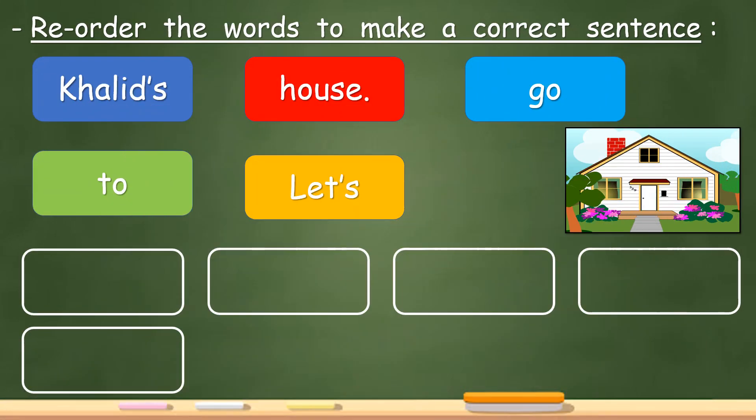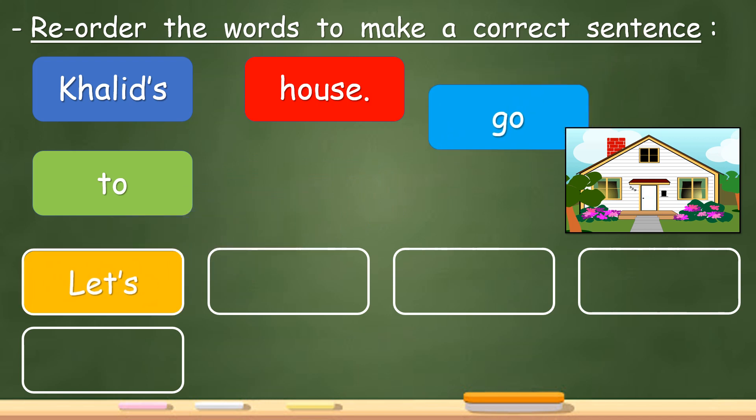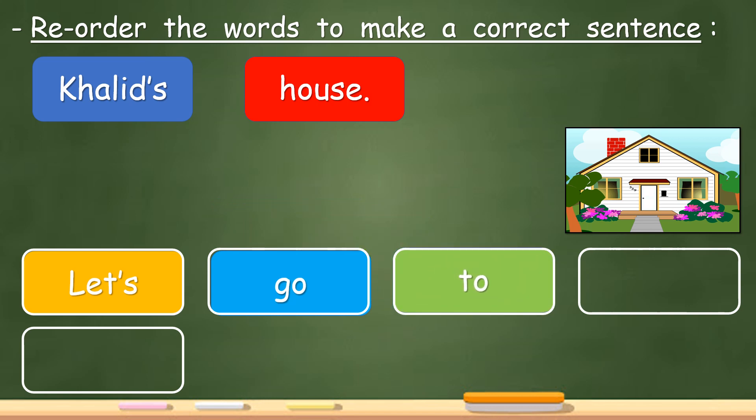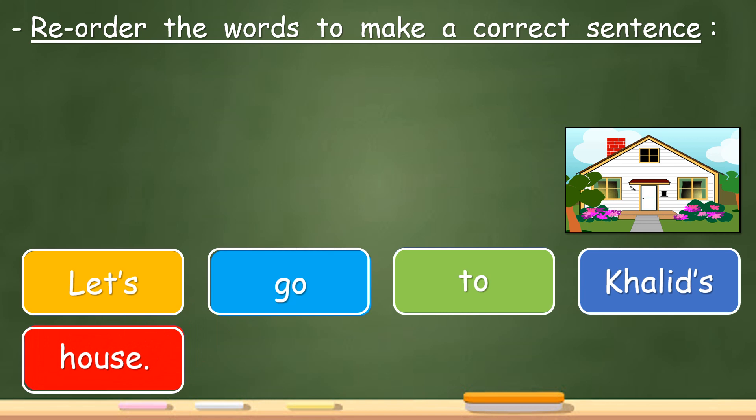Khalid's house, go to, let's. Let's start with let's, very good, go followed with to Khalid's house. Let's go to Khalid's house. Another one.